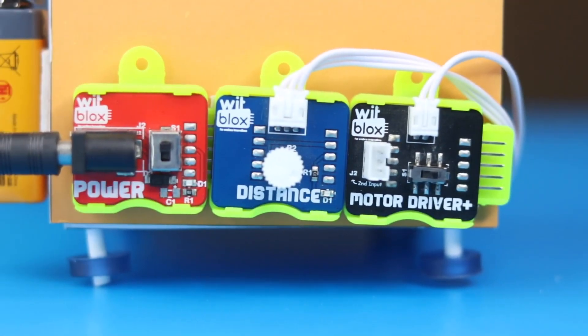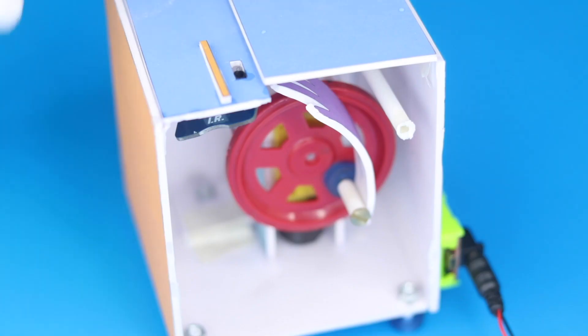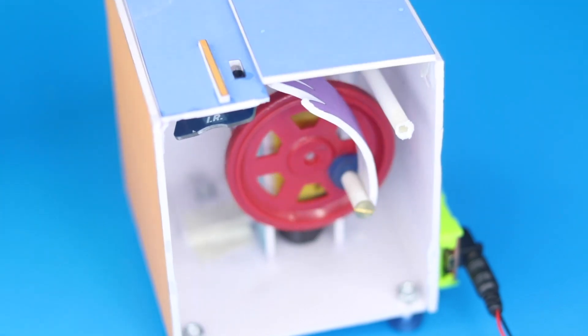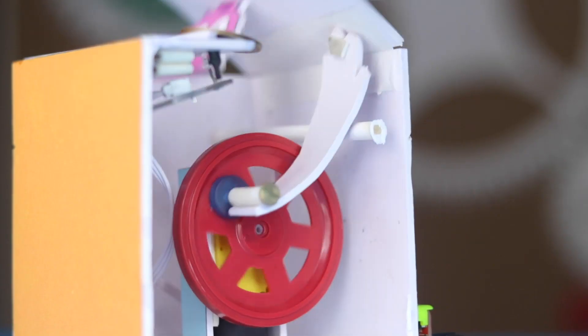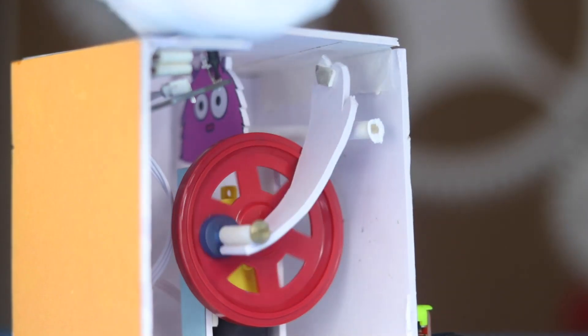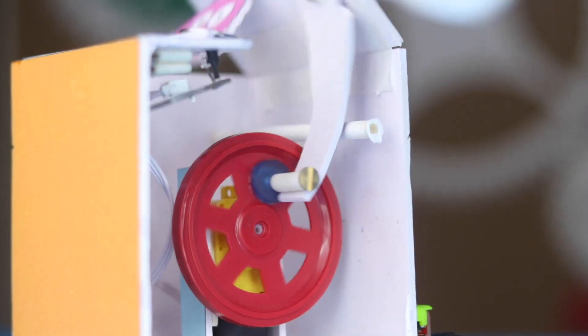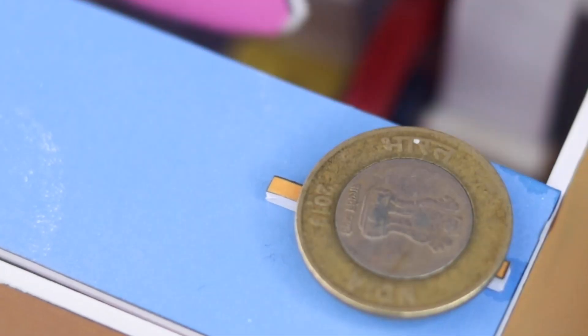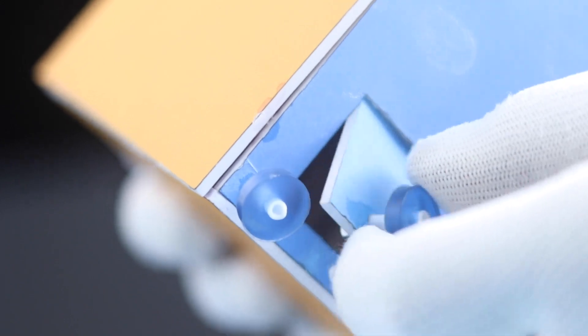We have a distance sensor which senses the coin. If the coin is present, the motor rotates. With the motor, we have a crankshaft mechanism which looks like a hand moving up and down. The hand goes up, opens the lid of the box and pulls the coin inside. And this bottom lid is to get your coin back.